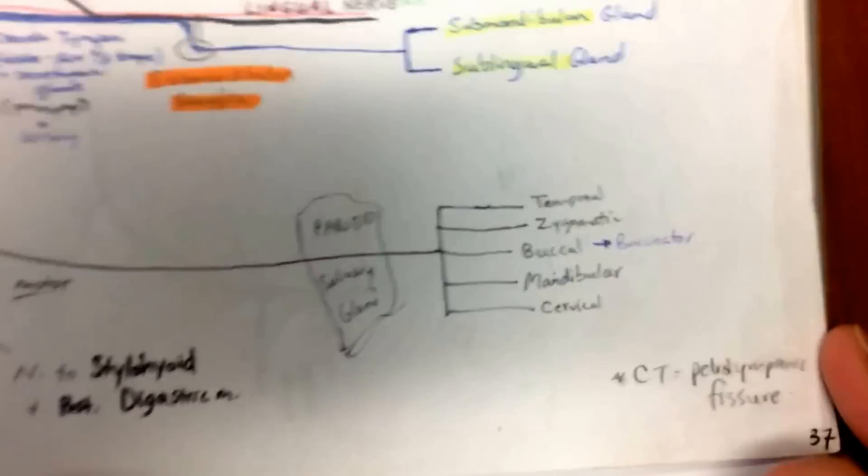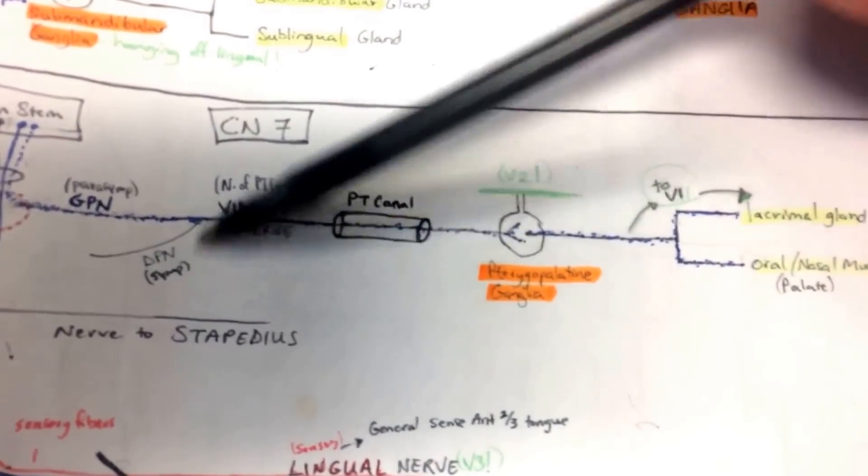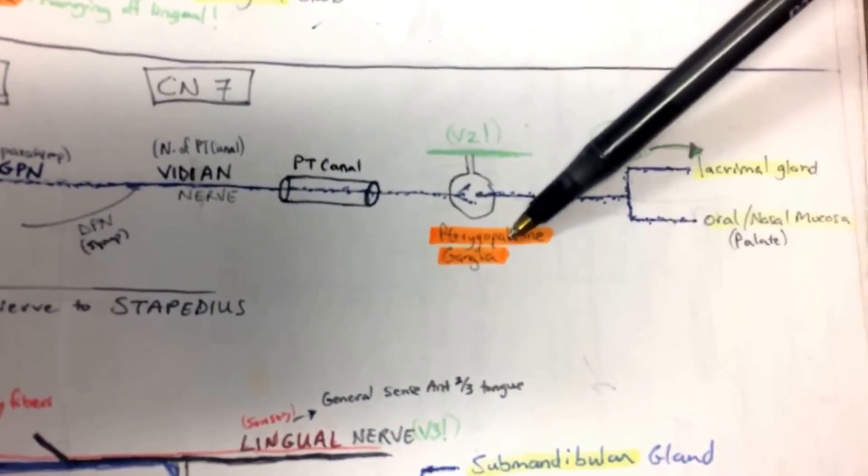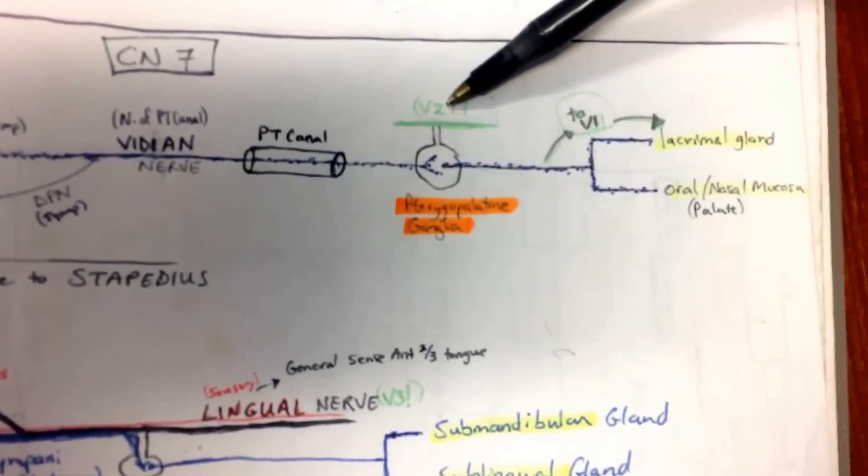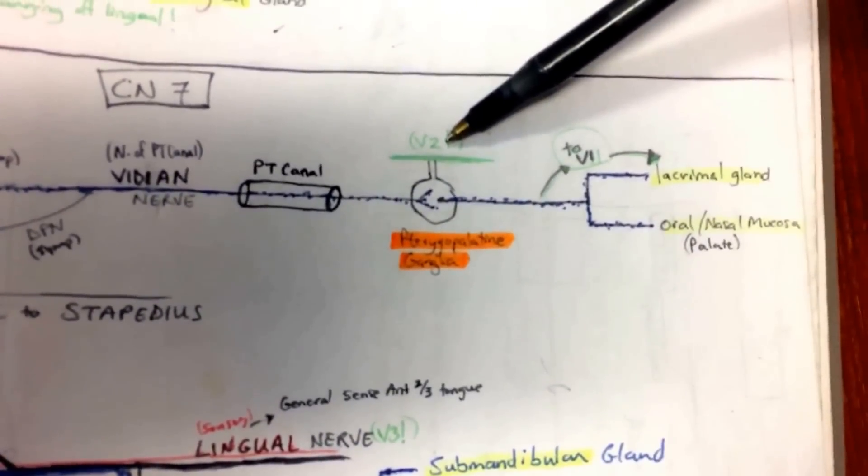So just to remember, this was the original drawing. The greater petrosal joining with deep petrosal nerve, the sympathetics, becomes vidian nerve, PT canal, PT ganglia, which if you remember, we said hanging off of V2, which is what we're talking about now. So you can connect those and actually draw one big drawing, which is a good idea.